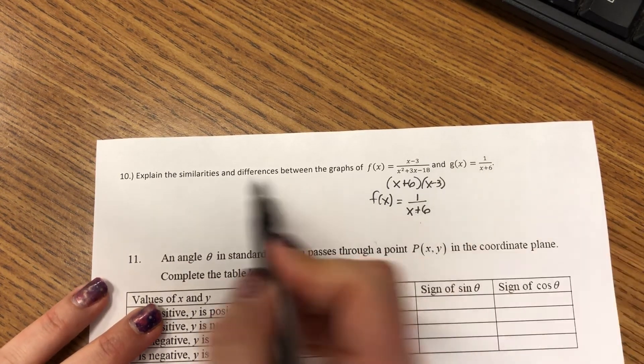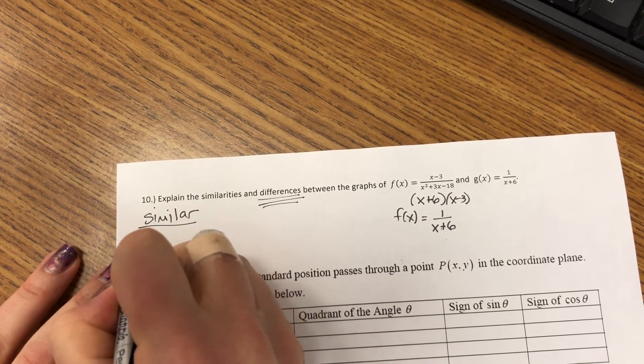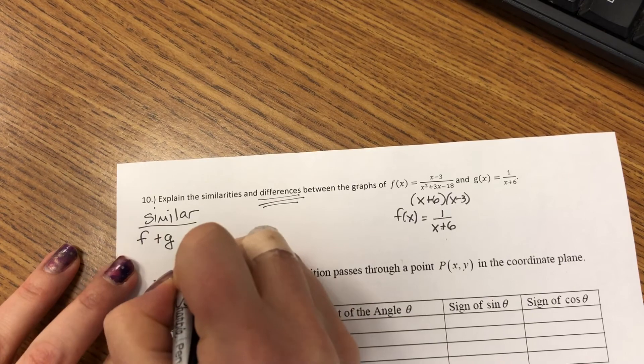They look like they're the same. There are differences. Do not say there are no differences. That is silly. I'm asking you for them. So the similarities, both f and g have a vertical asymptote at x equals negative 6 and a horizontal asymptote at y equals 0.